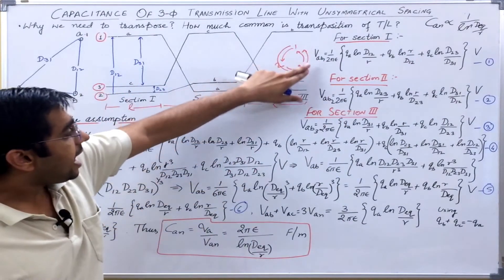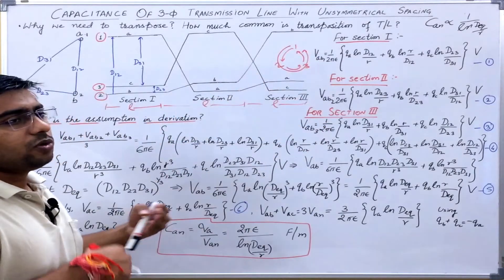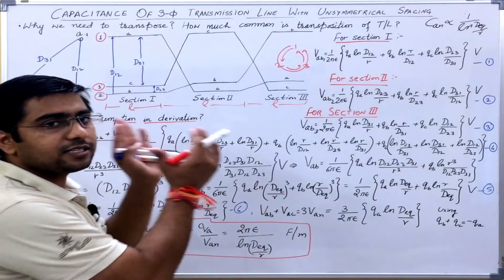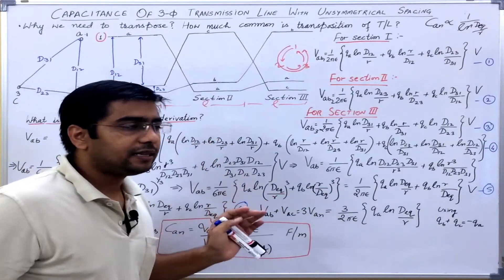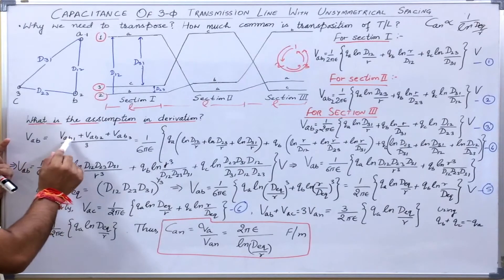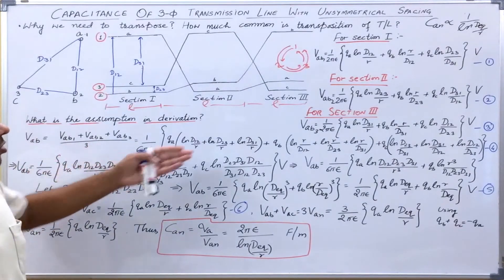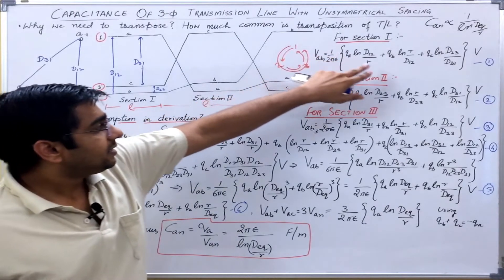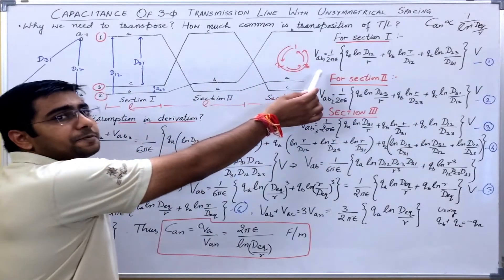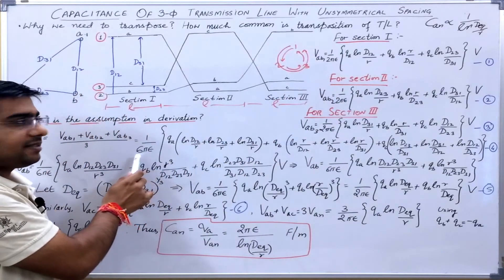We will take the average of these voltages to consider it as the actual voltage between phase A and B. That is, V_AB = (V_AB1 + V_AB2 + V_AB3) / 3. Since 1/(2πε) is common, dividing by 3 gives us 1/(6πε).